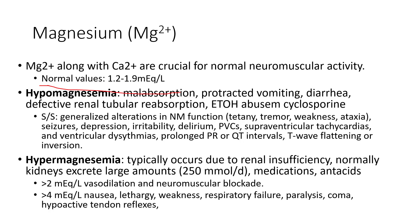Hypermagnesemia is typically due to renal insufficiency. Normally, you excrete a lot of magnesium; if you're not able to restore balance, something is wrong with the kidney. If magnesium is too high, you can get vasodilation and very low blood pressure. If it's super high, it may disturb membrane potentials, leading to an inability of muscles to contract effectively, resulting in respiratory failure and paralysis.